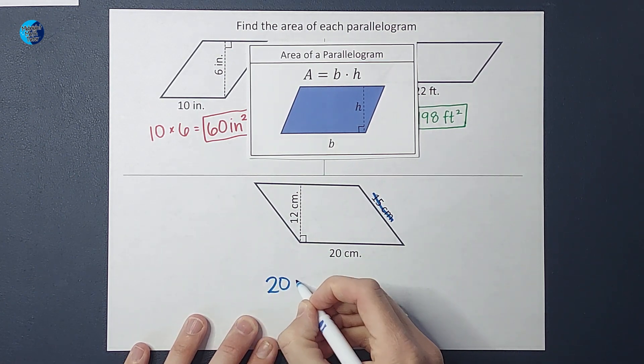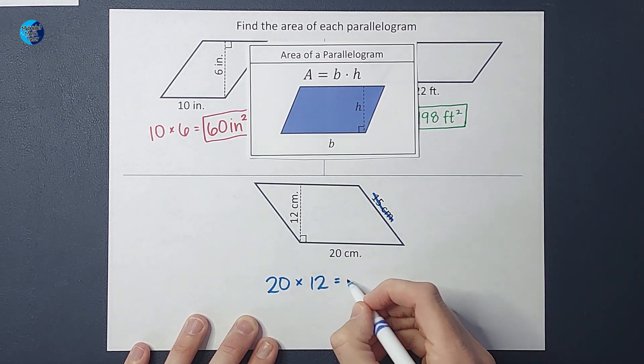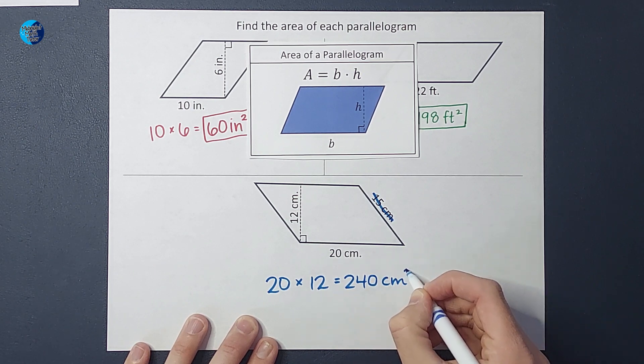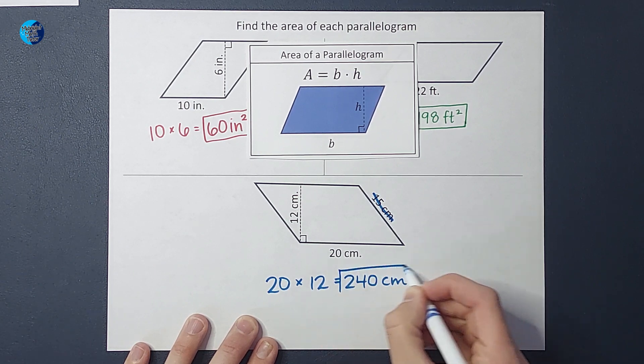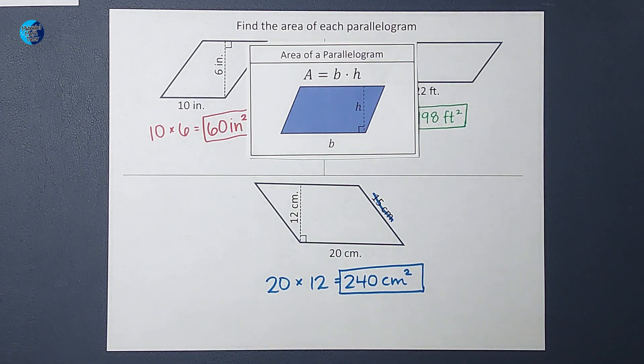So I'm still going to do my base, 20, times my height which is 12, which gives me 240, and we are in centimeters squared. All right, there we go. I will link a playlist for you of a bunch more area videos if you need them. Thanks.